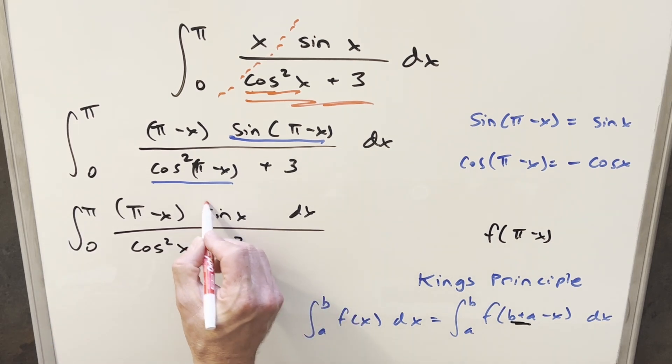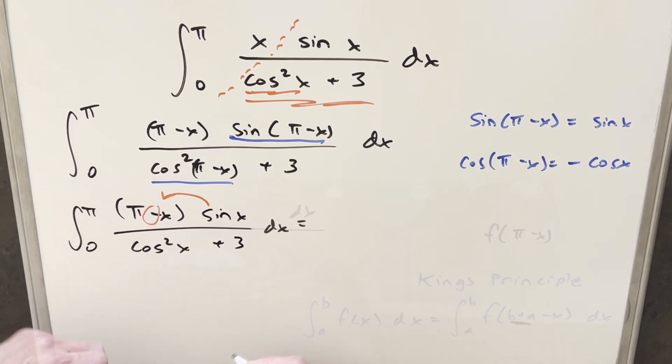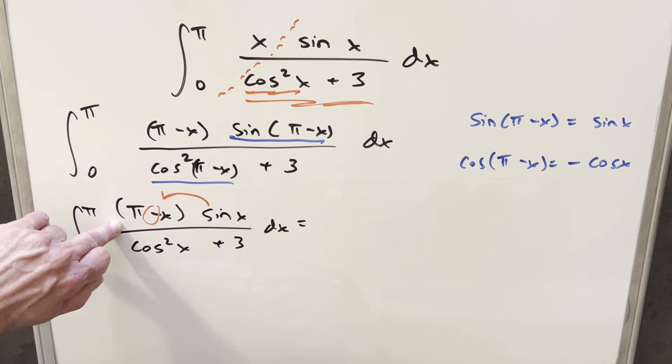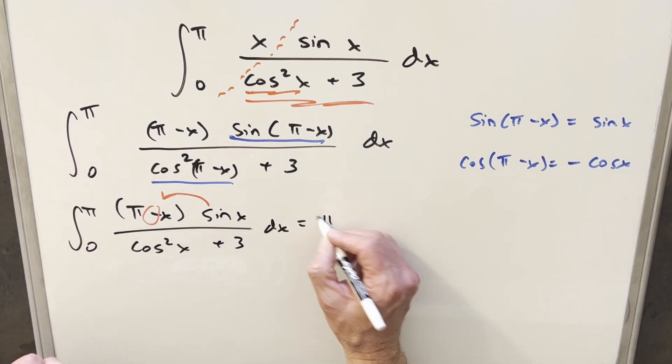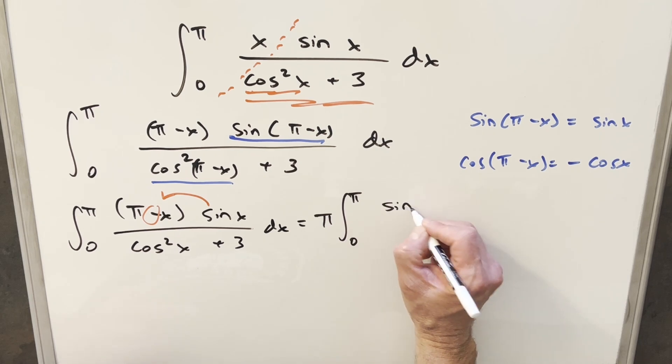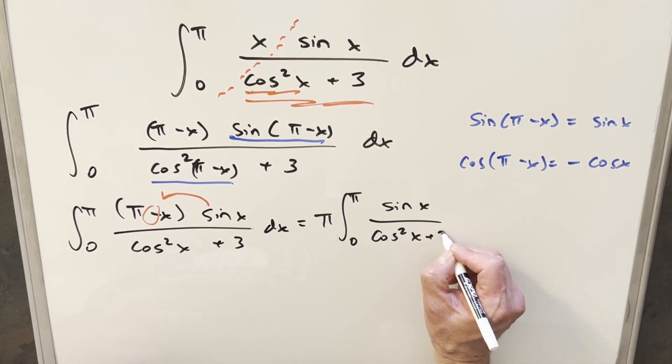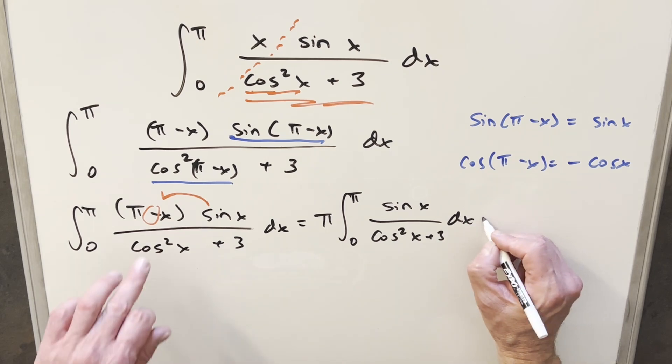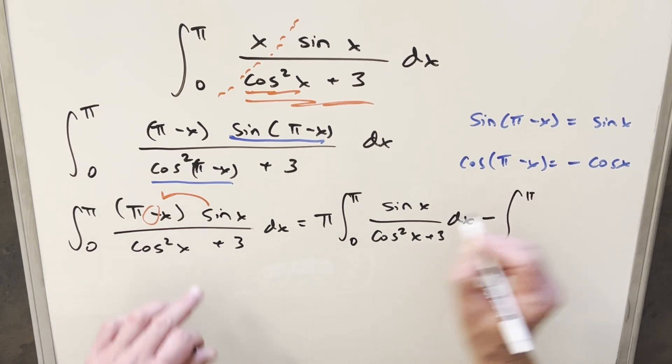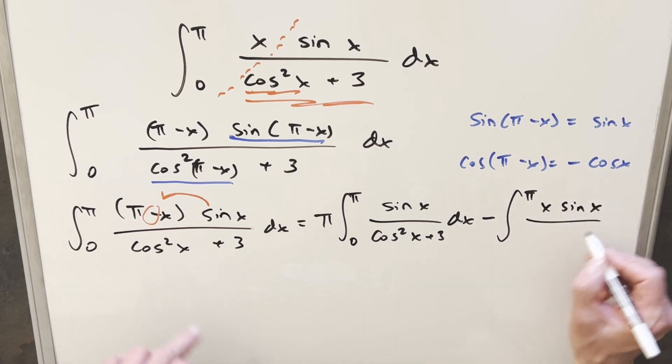And then now what I can do is distribute this sine back in here. But because we have this minus sign, I can split this up into two integrals. For my first integral, we're going to have pi times sine of x. But pi is just a constant, so I'm going to bring it up front and write it like this. This is going to become sine x over cosine squared x plus 3. And then for the second integral, I'll bring the minus sign out front, and we're just going to have x sine x here in the numerator with the same denominator.